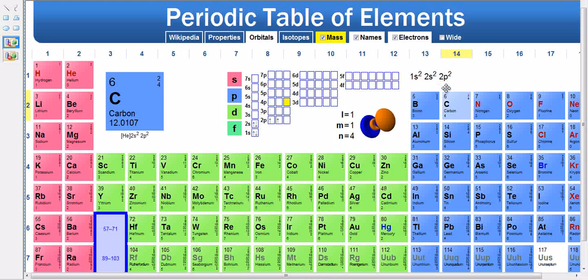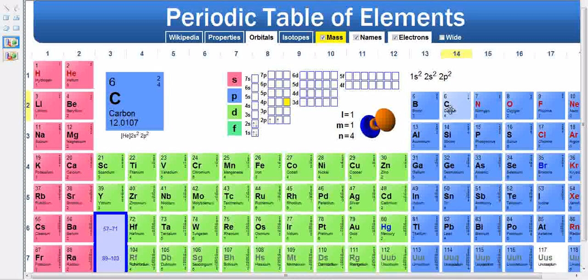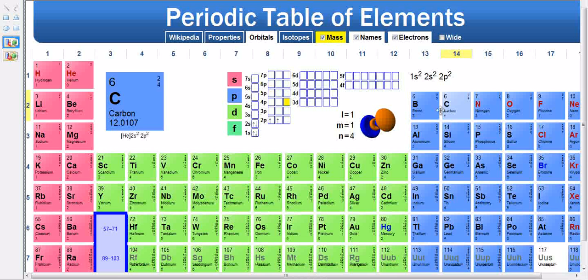We can also look at the periodic table and find the principal quantum number, the highest principal quantum number, by looking at which period we're in. If carbon is in the second period, we count the electrons associated with the 2s, which is 2, and the electrons associated with the 2p, which is 2.